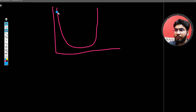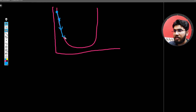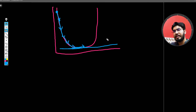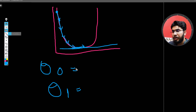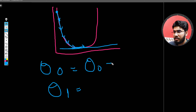In the first step we update our theta, so we get our next error value. In the next step we update our theta again, and again, and we repeat this step until we achieve the minimum point. The question is: how are we going to update theta 0 and theta 1? What I am going to do is say: new theta 0 equals the current theta 0 minus n times the gradient of theta 0.